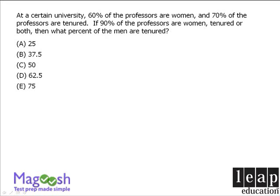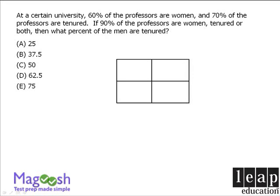Given this, we can solve this question using a double matrix. The top two squares will be reserved for female professors and the bottom two squares for male professors. The left-hand side column will be reserved for tenured professors and the right-hand side for untenured.